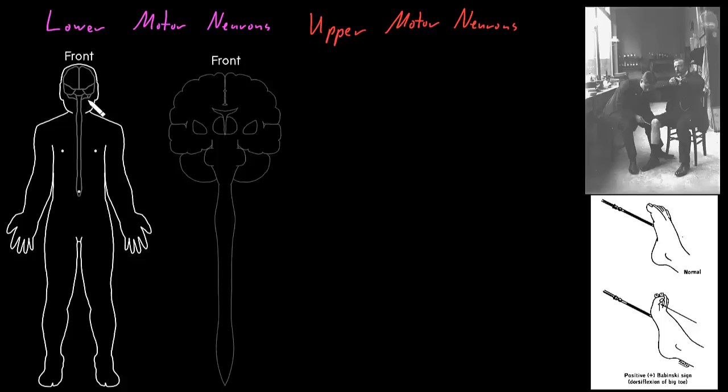When we talked about the lower motor neurons, we talked about how they have their somas either in the brain stem or in the spinal cord, and how they send axons out through nerves in the peripheral nervous system to synapse on and control skeletal muscle cells — to tell those skeletal muscle cells when to contract. The lower motor neurons that pass through spinal nerves primarily control muscles of the limbs and trunk, and those that pass through cranial nerves primarily control the skeletal muscles of the head and neck.